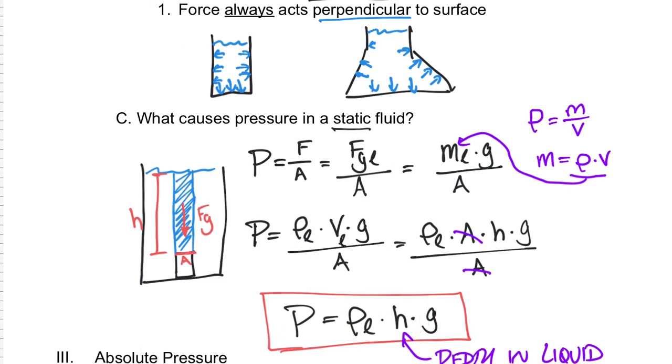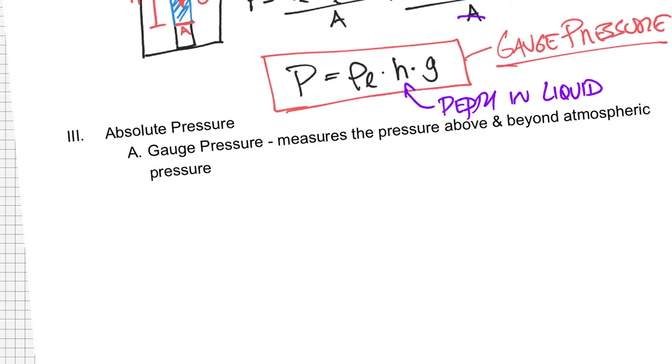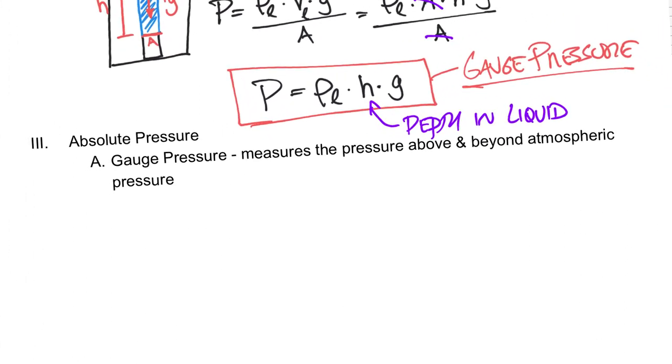And the combination of those is going to be my gauge pressure. That's how I would calculate gauge pressure within any liquid.